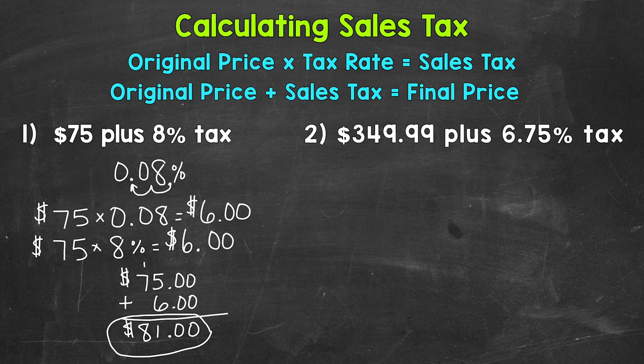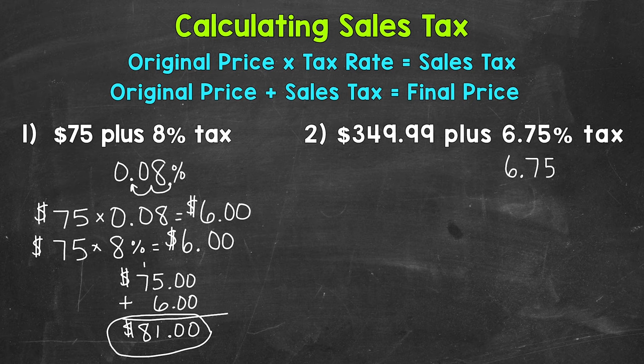Let's move on to number two, where we have $349.99 for our price and a sales tax rate of 6.75%. Let's convert that tax rate to a decimal by moving the decimal twice to the left. Moving it once, then twice, gives us 0.0675.